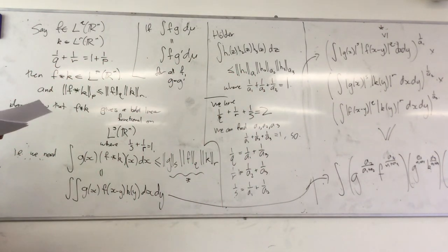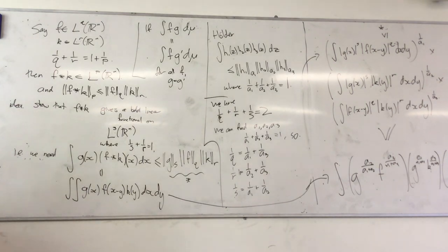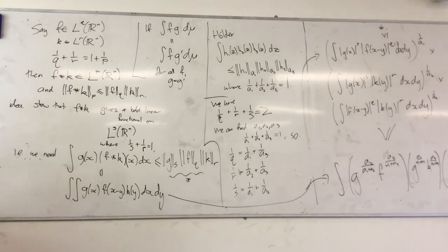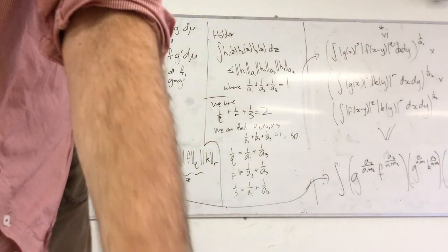When we get started next week we'll talk about the weak topologies, the weak-star topologies, and all this crazy topological stuff on Banach spaces and their duals. I think we're done with the messy examples.